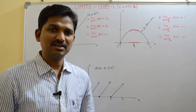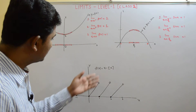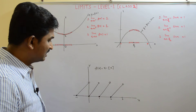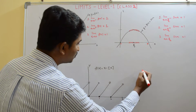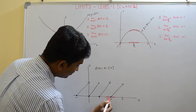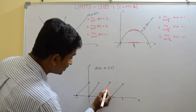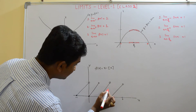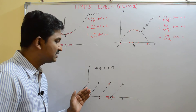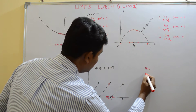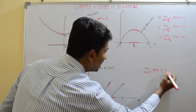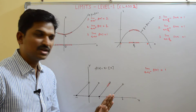Now I will discuss a function for which the limit does not exist at a particular value. This is called the fractional part of x — its graph looks like this. We discuss the limit of this function when x approaches to 2. As x approaches to 2 from the left, f of x is approaching to 1. So the left hand limit: limit x tends to 2 minus, f of x equals 1.